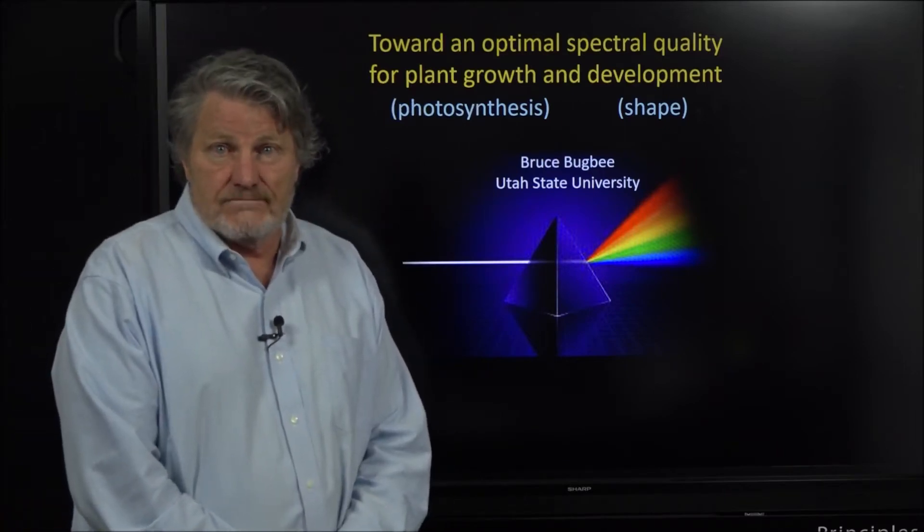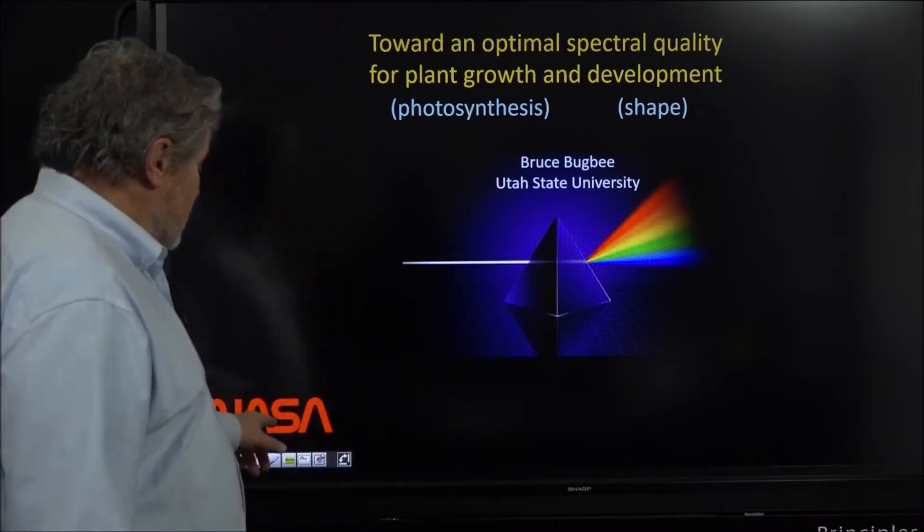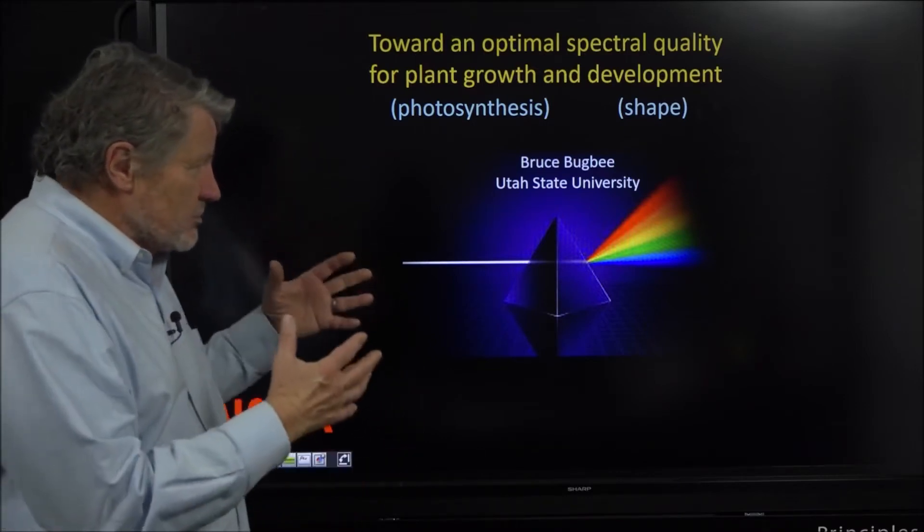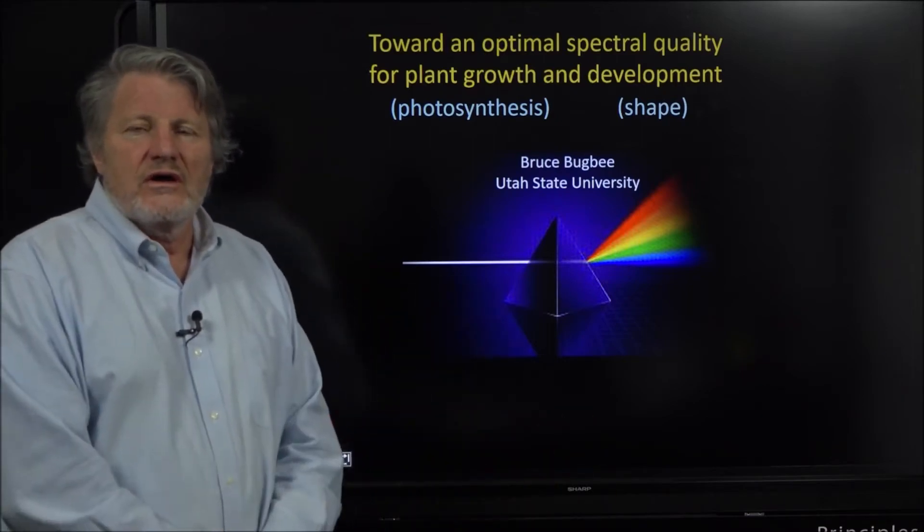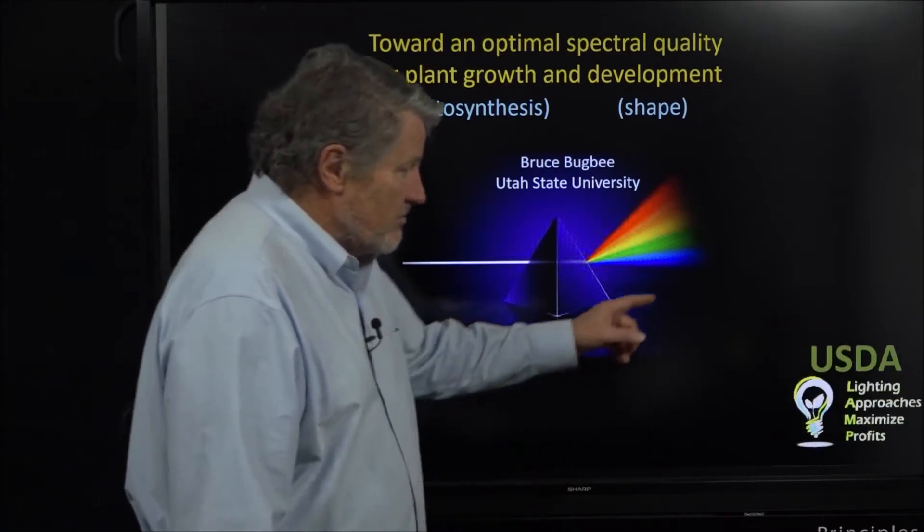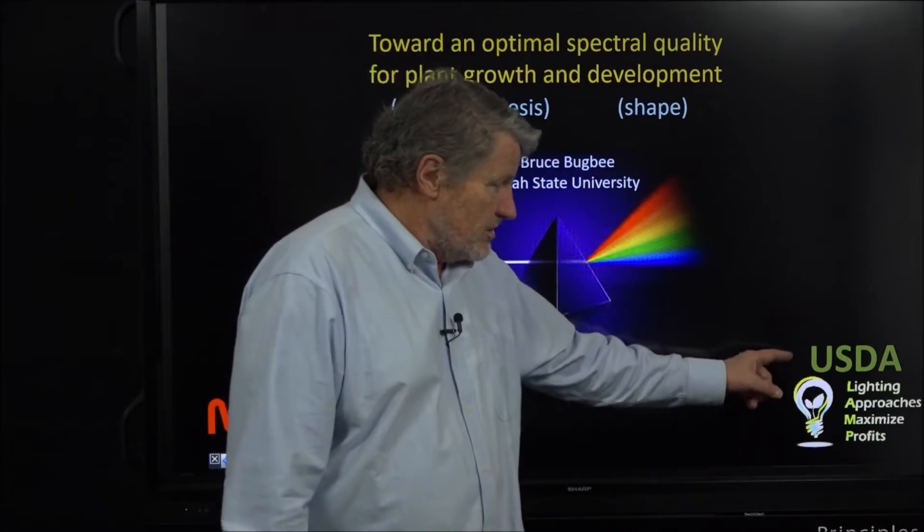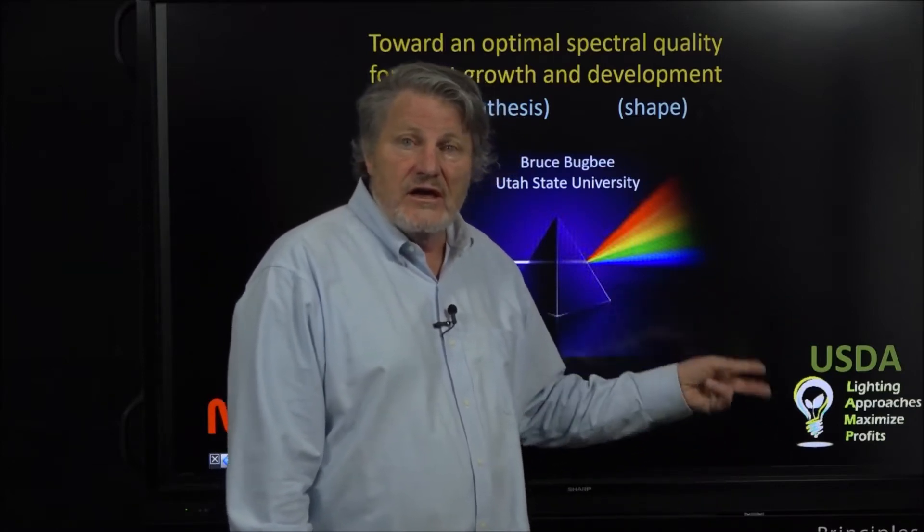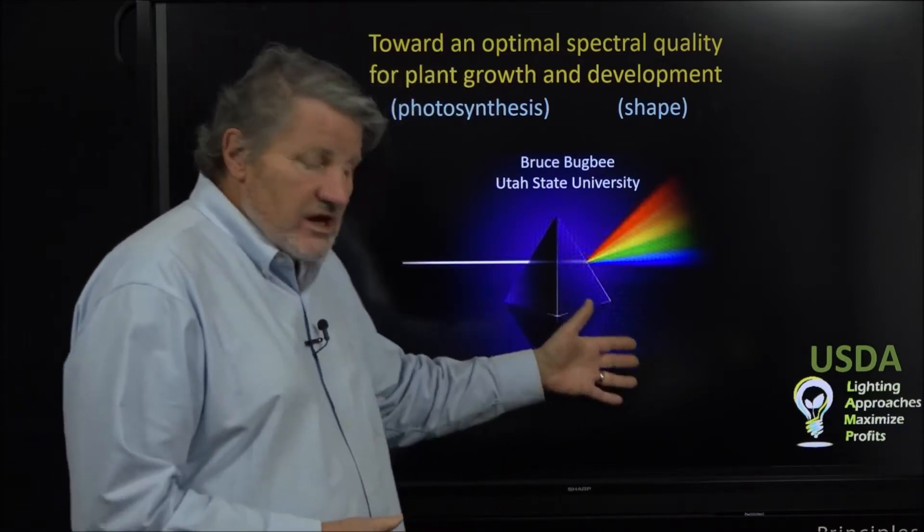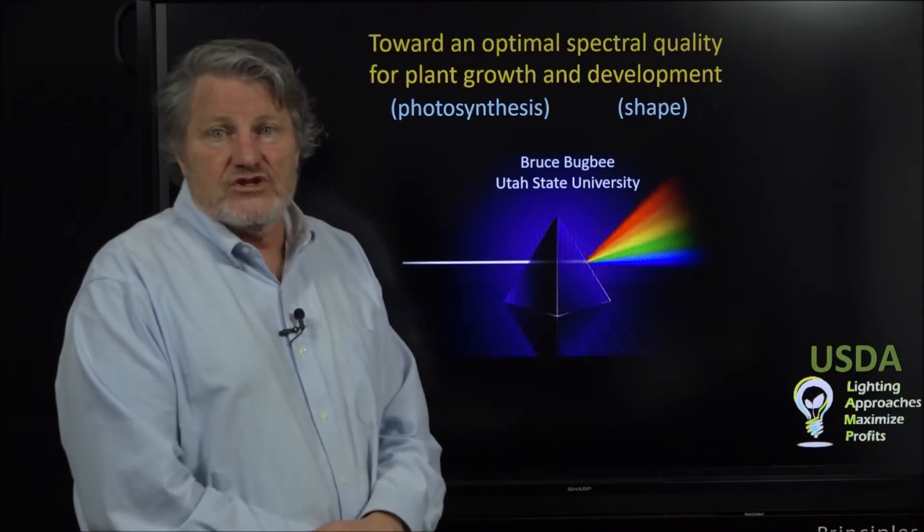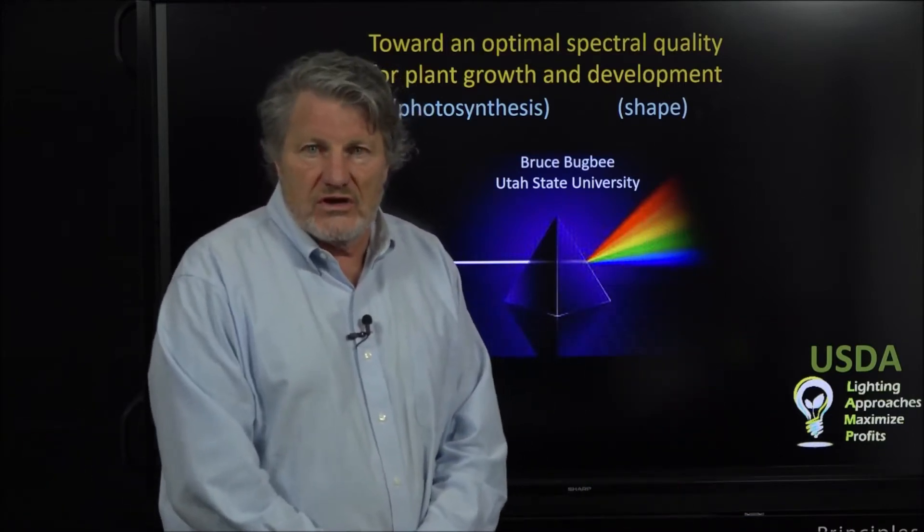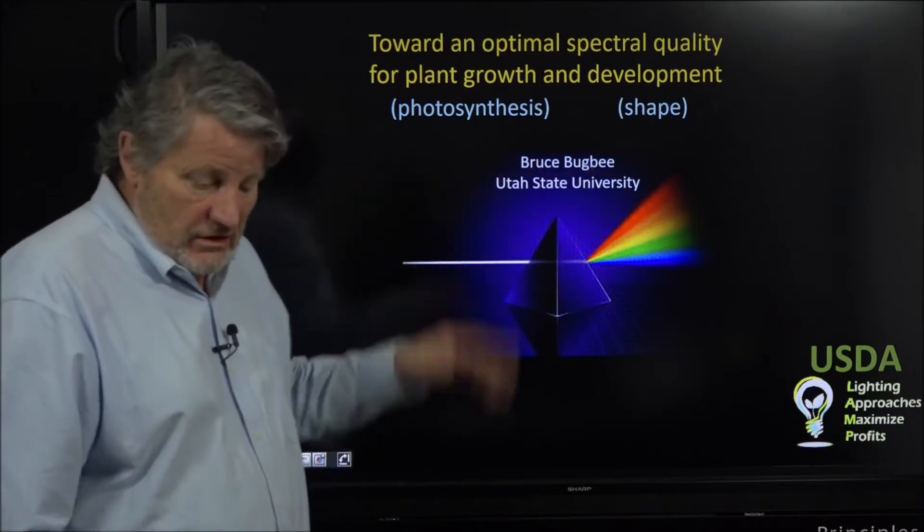I first want to acknowledge NASA - they have funded my laboratory now for over 30 years and that has allowed us to do some very basic research on spectral quality on photosynthesis and development. We also recently got a grant from the USDA through the University of Georgia called the lamp project - lighting approaches to maximize profits. This is a more applied project to look at spectral quality and plant shape, with big implications for supplemental lighting in greenhouses and for indoor agriculture and vertical farming.